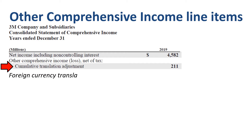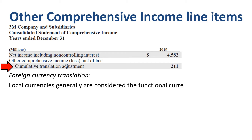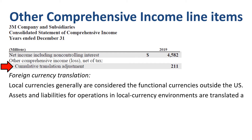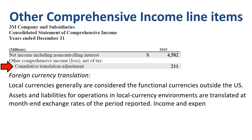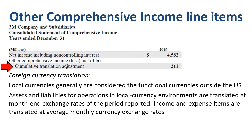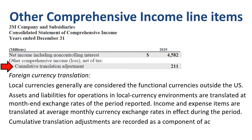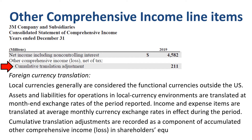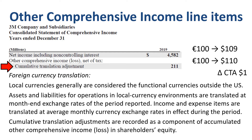From the Notes to Consolidated Financial Statements, section Foreign Currency Translation: local currencies generally are considered the functional currencies outside the United States. Assets and liabilities for operations in local currency environments are translated at month-end exchange rates of the period reported. Income and expense items are translated at average monthly currency exchange rates in effect during the period. Cumulative translation adjustments are recorded as a component of accumulated other comprehensive income or loss in shareholders' equity. Simply put, if a US multinational company has a subsidiary in Europe which operates in euros as the functional currency, then 100 euros of net assets might translate to 109 USD in one accounting period and 110 USD in the next. The difference of one dollar is offset in CTA.